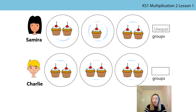What about Charlie? Does Charlie have the same or a different number of cupcakes in each of his groups? Charlie has the same number of cupcakes in each of his groups. Can you remember the word that describes our groups if there is the same number in each of them? Equal. So Charlie has equal groups because there is the same number of cupcakes in each of them.